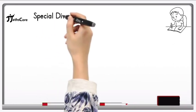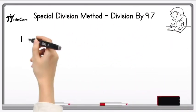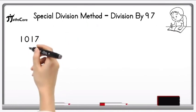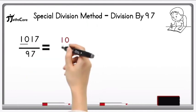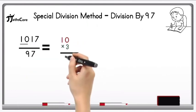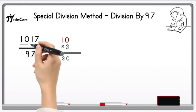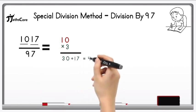Let's take one more example on division by 97. The example is 1017 divided by 97. So write down this 10 here and multiply it with 3. 10 multiply by 3 equals 30, and add this 17 in it. 30 plus 17 equals 47.